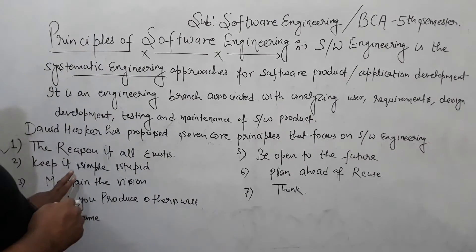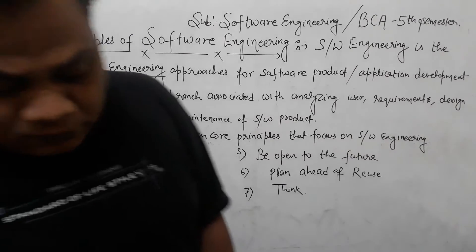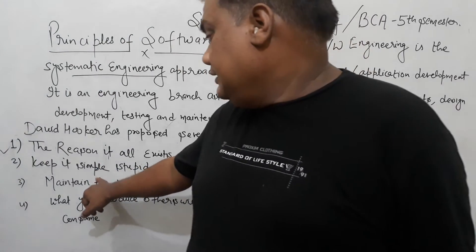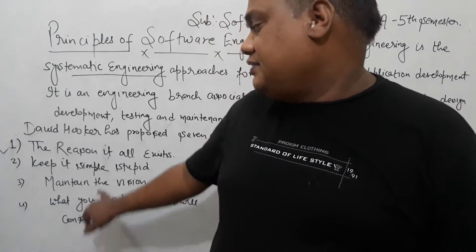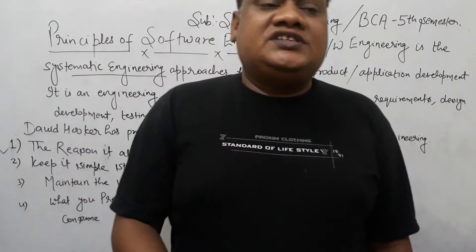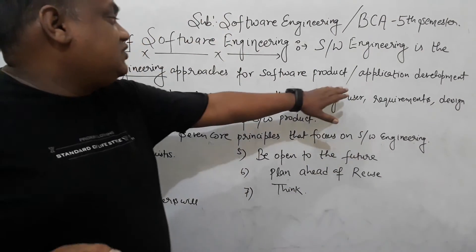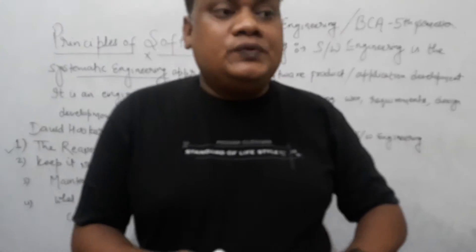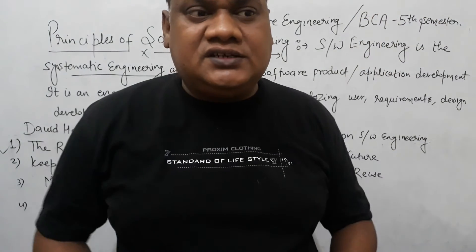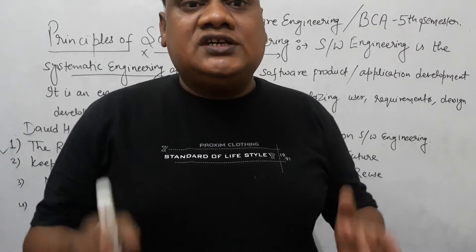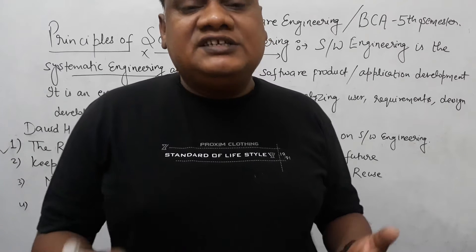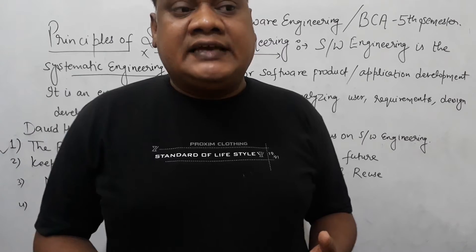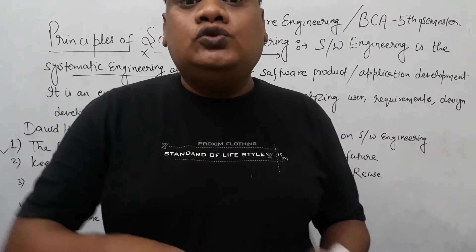Next: keep it simple and stupid. This is a very important principle. Keep it simple and stupid means that software engineering is a systematic approach to develop software applications. This approach is not haphazard — simplicity is very important. Because when things are more complex, quality will decrease. Today, a good product and a good software is one which is user-friendly.